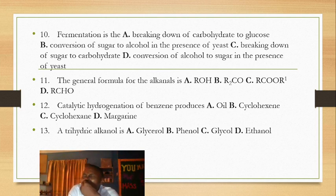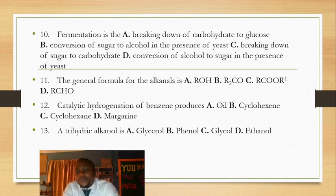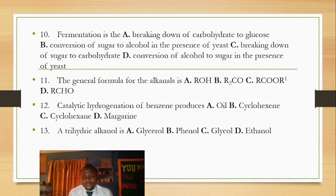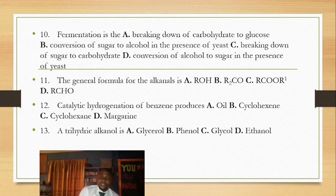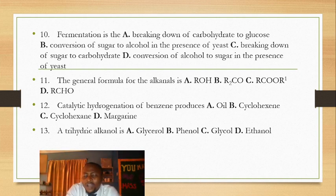Question 13: a trihydric alkanol — this is a classification of alkanols. You can classify alkanols as primary, secondary, and tertiary, or monohydric, dihydric, and trihydric. Trihydric means there are three hydroxyl groups attached to the alkanol. The answer is glycerol — propane-1,2,3-triol — a 1,2,3-trihydric alkanol.